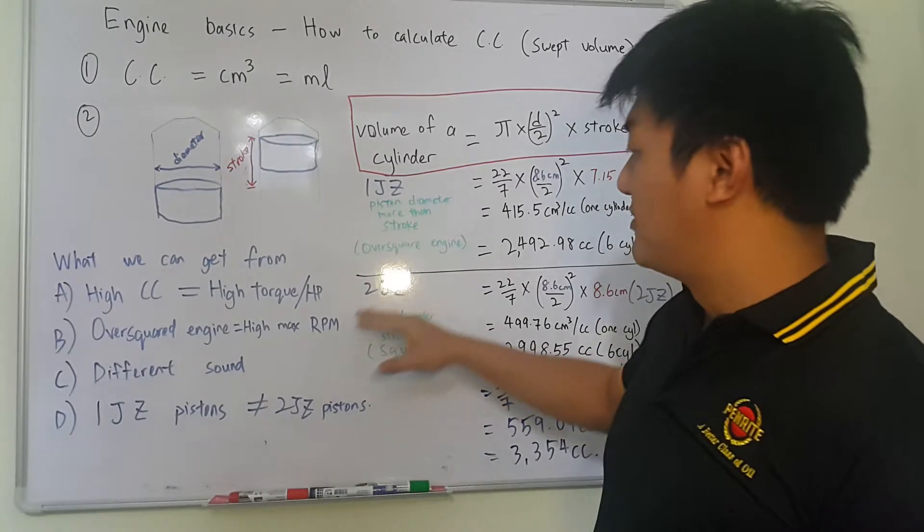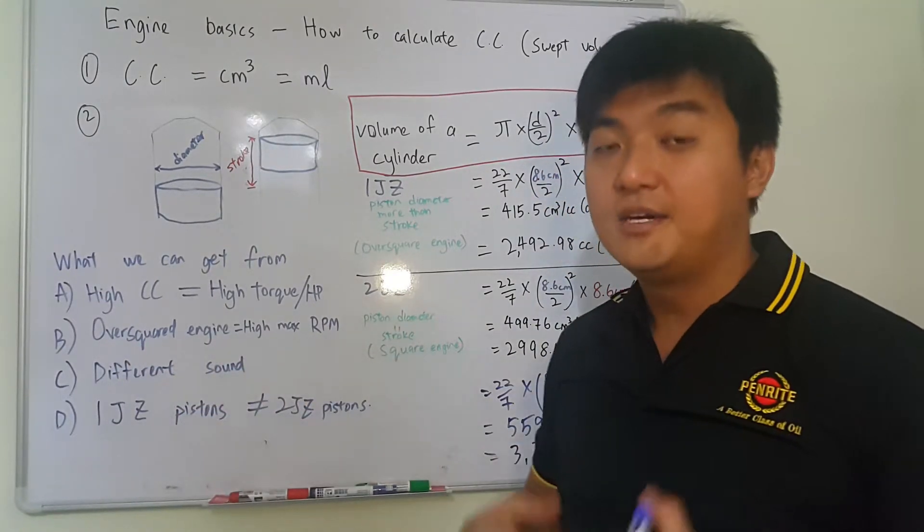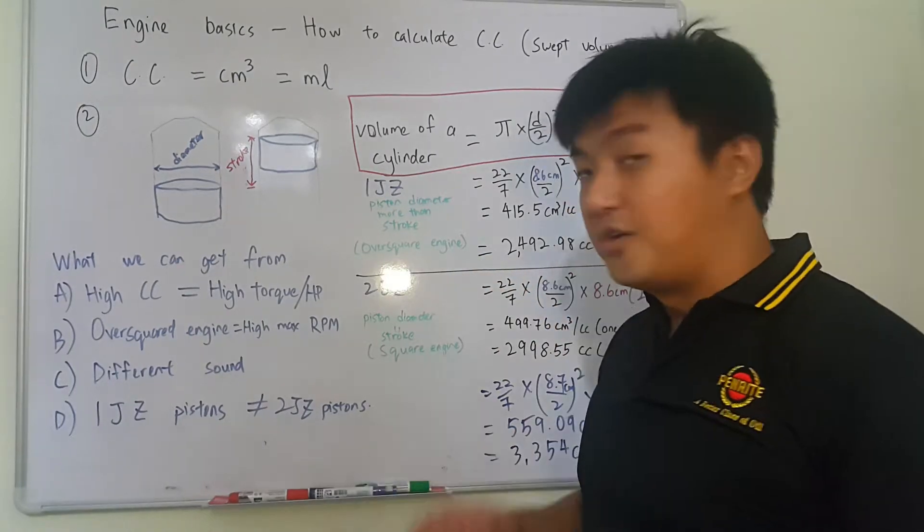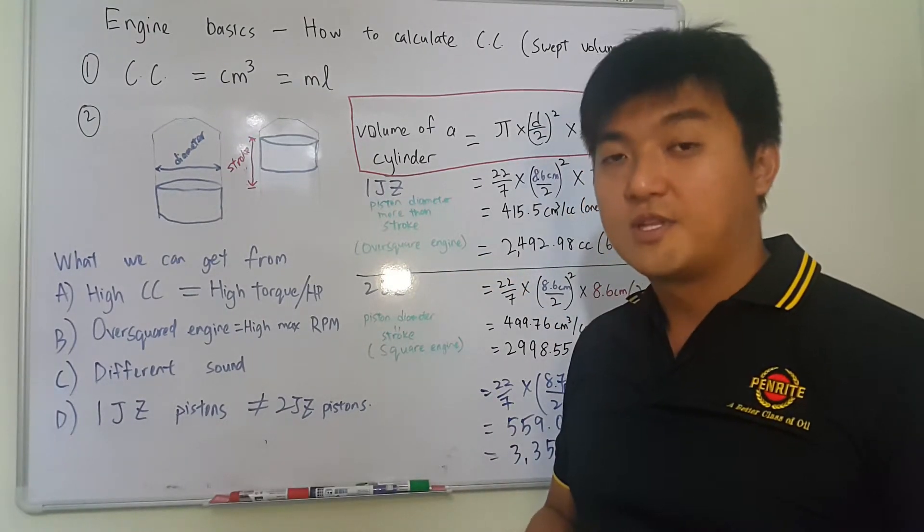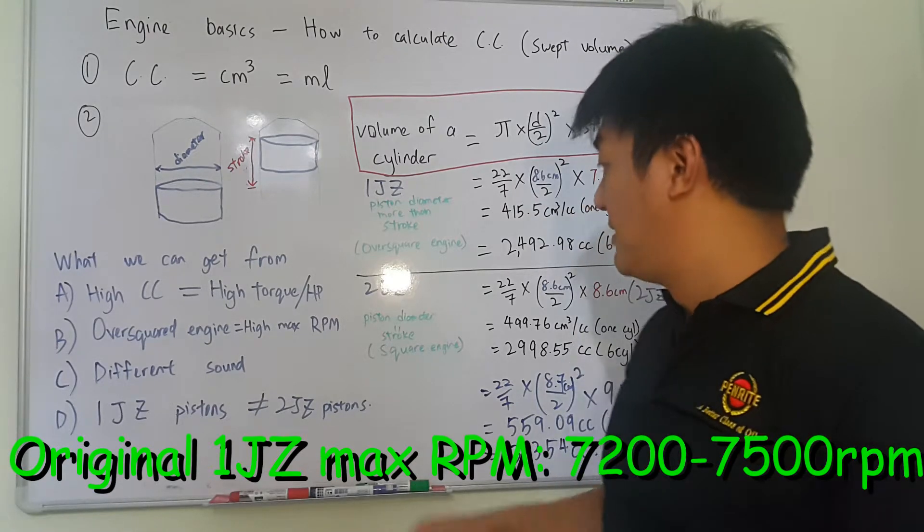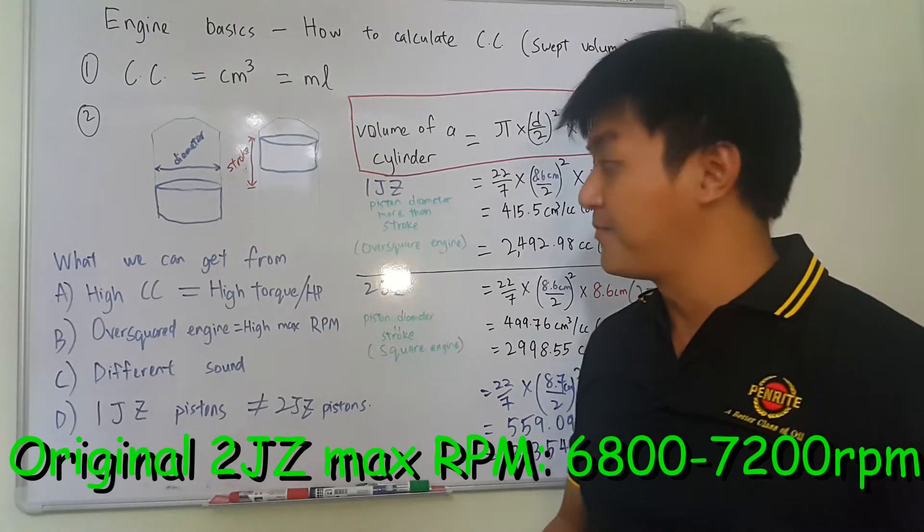Okay, and then the second thing we can get from this is, over square engine has higher maximum RPM. For one JZ, the original maximum RPM is 7,200 RPM to 7,500 RPM. But for two JZ is about 6,800 RPM to 7,200 RPM.